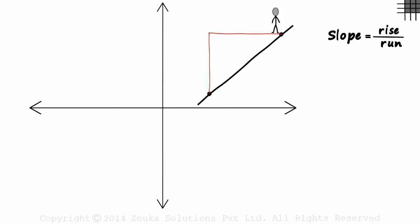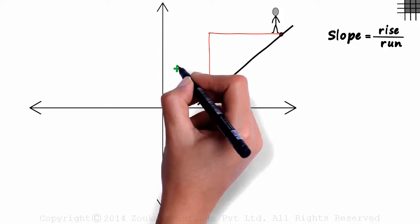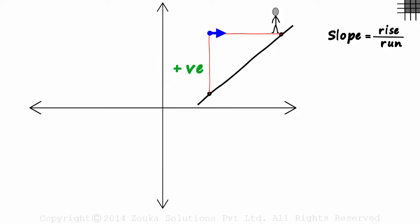Yes, the sign of the slope depends on the sign of rise and run. A good way to understand that is by knowing that rising up is always positive. And running to the right is also positive. Going down or running left will both be negative.